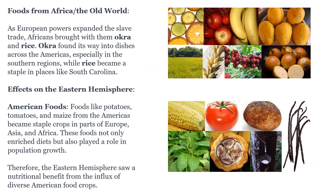Foods from Africa and the Old World. As European powers expanded the slave trade, Africans brought with them okra and rice. Okra found its way into dishes across the Americas, especially in the southern regions, while rice became a staple in places like South Carolina.